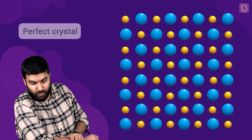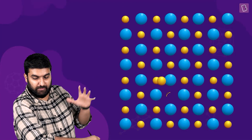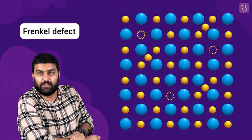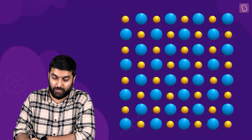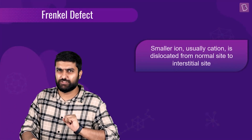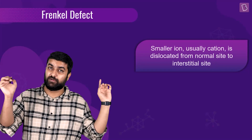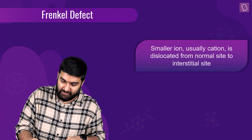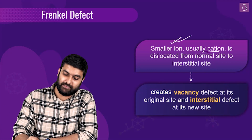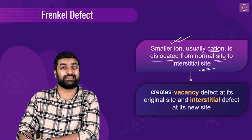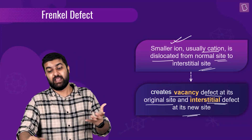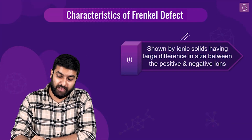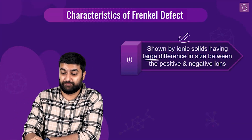Think about it — we have a perfect crystal, then something happens. Particles move, and this is a combination of the vacancy and interstitial defect. The smaller ion, usually the cation, is dislocated from its normal site to an interstitial site. This creates a vacancy defect at its original site and an interstitial defect at its new site — hence a combination of the two.